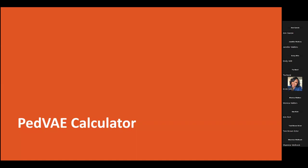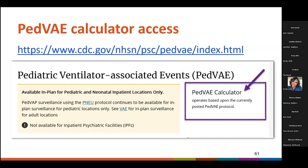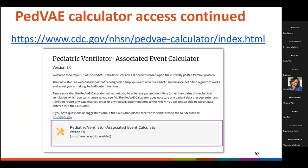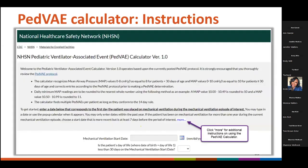Now let's look at the PVAE calculator. The PVAE calculator is a very helpful tool that we offer to assist with PVAE determinations. It can be accessed from the PVAE webpage from the link at the top of the page, and also from the link on the PVAE events page. Once you're on the PVAE calculator landing page, click on the box at the bottom of the page to access the calculator. Please be sure to read the instructions on how to use the calculator. The calculator runs locally on your computer and any data you enter is not stored or transmitted to NHSN.